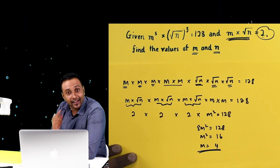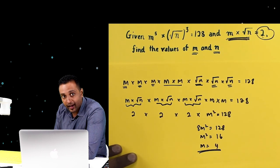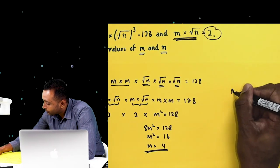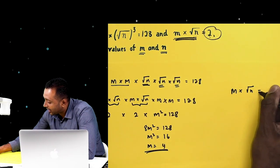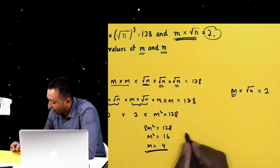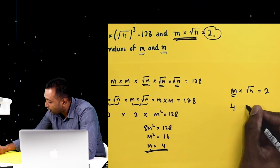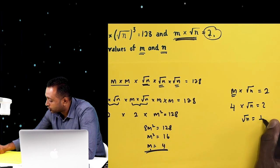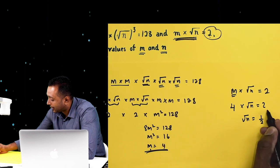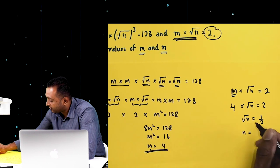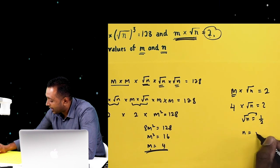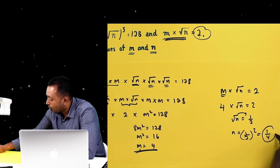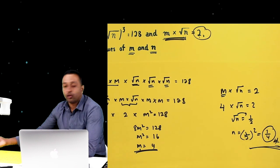Once you get m equals 4, all you need to do is find the value of n using the given information: m times square root n equals 2. Substituting, 4 times square root n equals 2, so square root n equals 1 over 2. Squaring both sides, n equals 1 over 4.